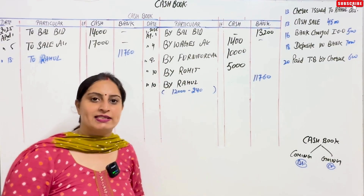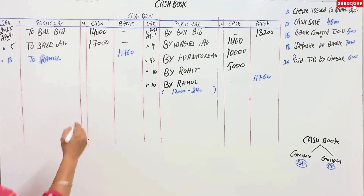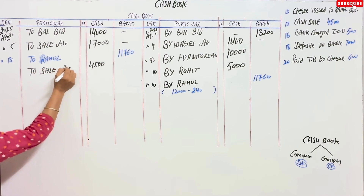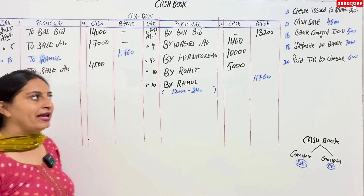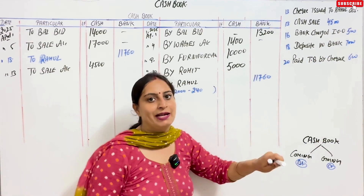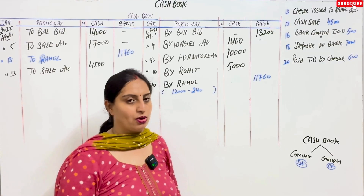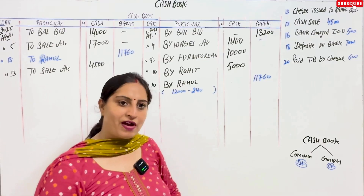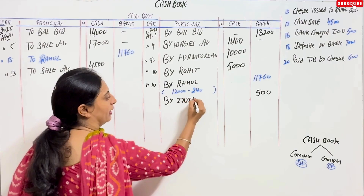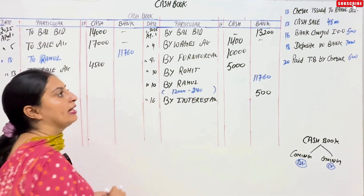April 13: cash sales ₹4,500 — enter on the debit side in the cash column. April 16: bank charges interest on overdraft ₹500. The bank has debited our account, so this goes on the credit side of the bank column — 'By Bank Interest Account,' dated April 16.